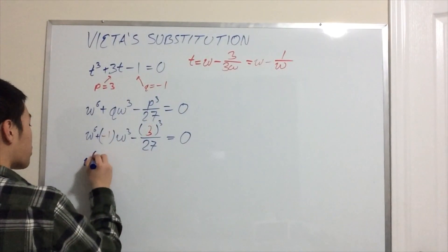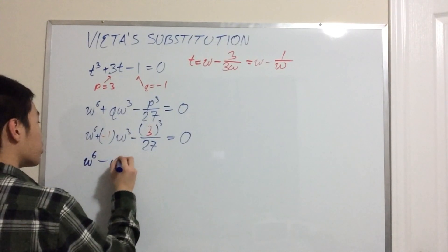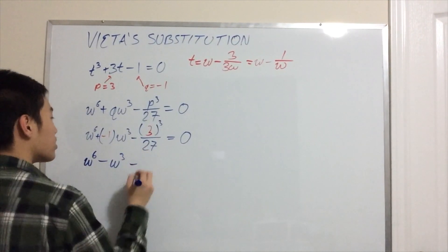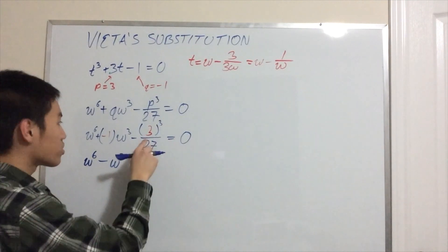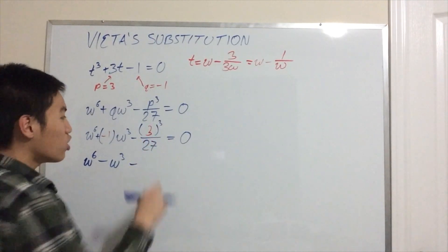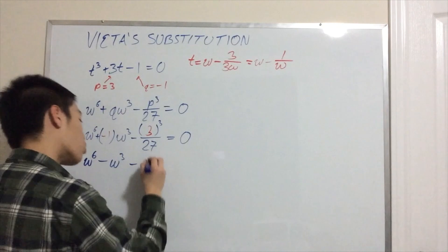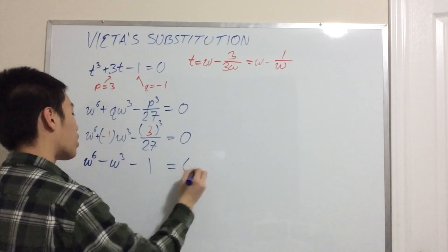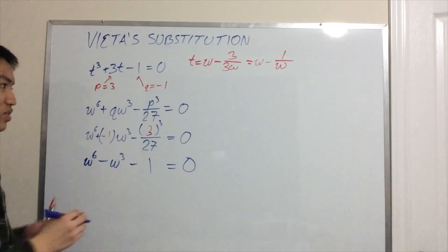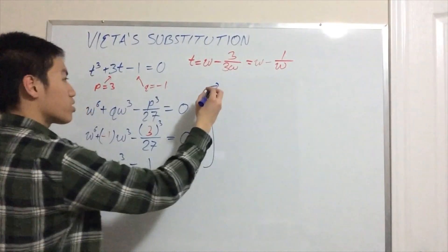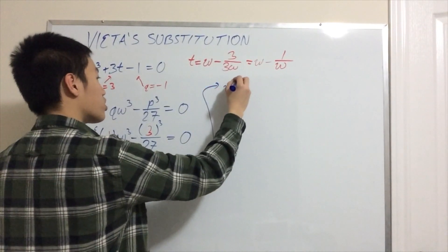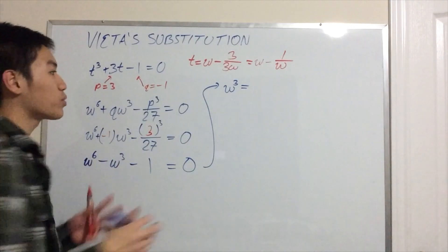Now, we have w⁶ - w³ and then minus, this is 3³, which is 1, over 3³, which is 27, over 27, which is just 1, equal to 0. So, now we can say, and I'll write it up here, w³ is just going to be the solution to a quadratic formula.